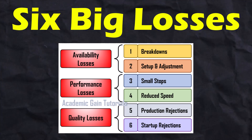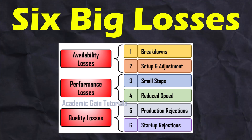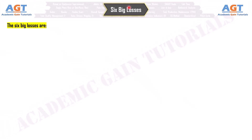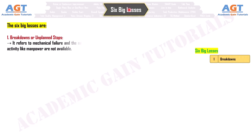Six big losses. The six big losses are breakdowns or unplanned stops. It refers to mechanical failure and the need for maintenance or stoppage due to an unplanned activity, like manpower not being available.